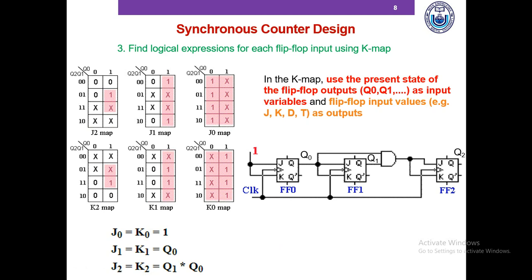We have designed our 3-bit synchronous up counter that counts from 0, 1, 2, up to 7, and then starts over again from 0. We can also design the counter using D or T flip-flops, which will result in only 3 K-maps and make the process less lengthy.